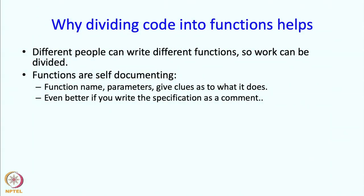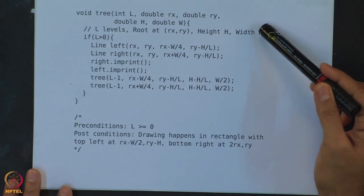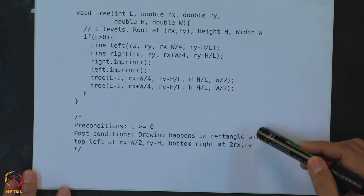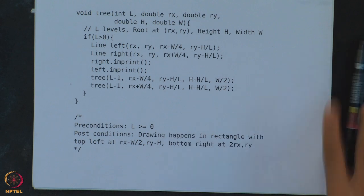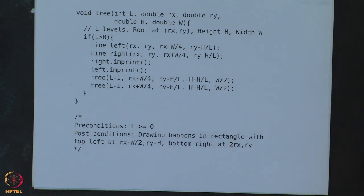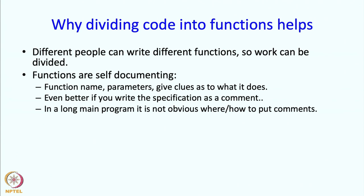When you write a function, there is a natural expectation that you should write the pre-conditions and post-conditions. We have written pre-conditions and post-conditions in a compact manner here and in a more descriptive manner there. In a long main program it may not be obvious where and how to put comments, whereas in a function there is a natural, proper place for them.